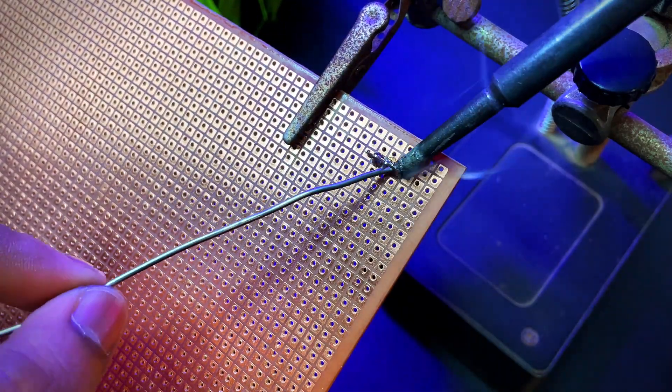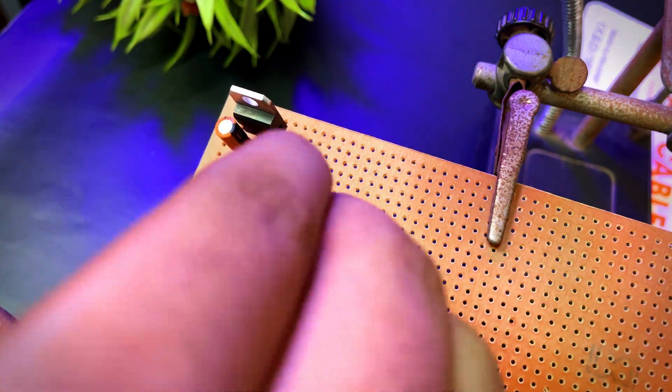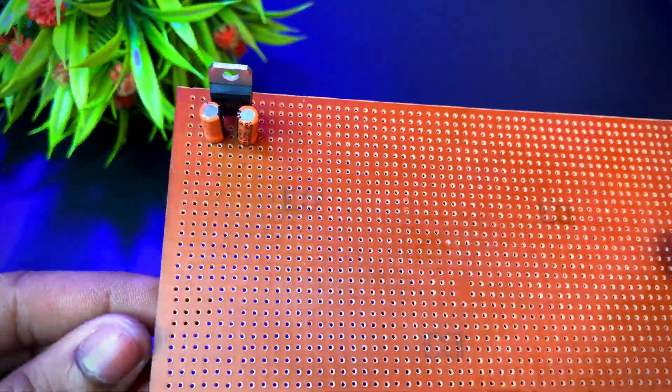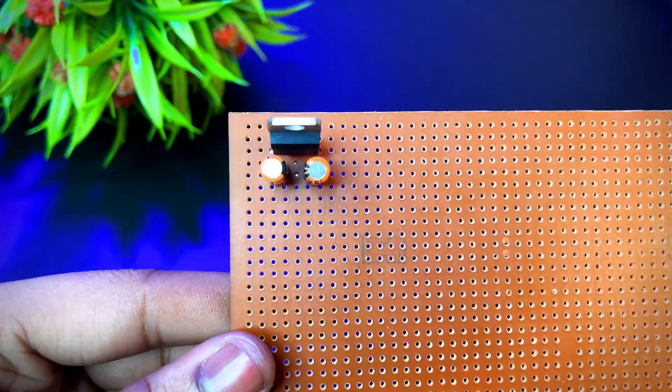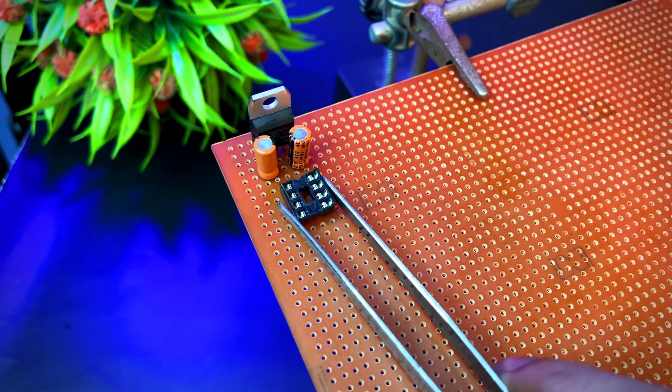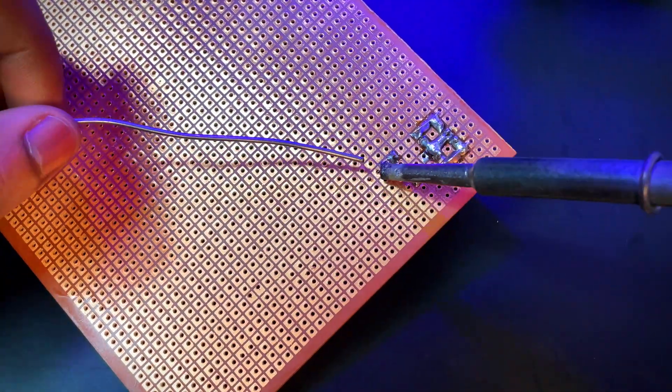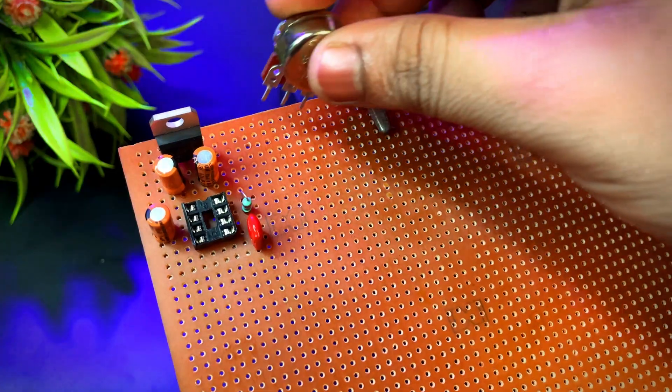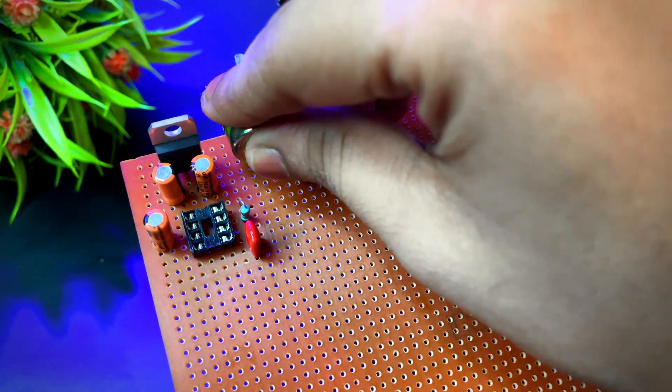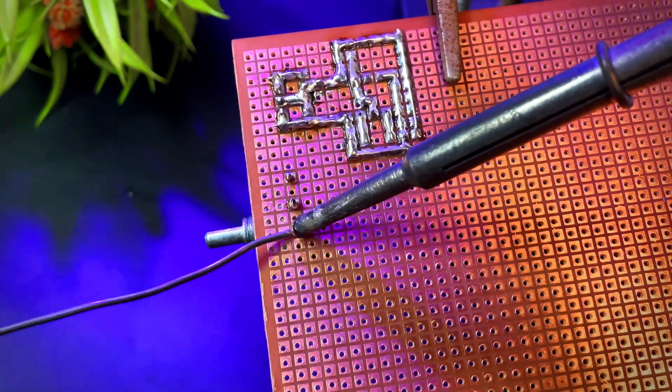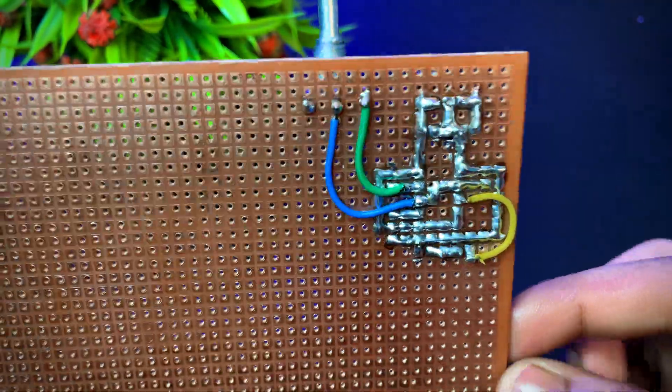I am using 7805 voltage regulator to convert 9 volt to 5 volt. And also, don't forget to add input and output capacitor to keep things smooth. Next up, the clock generator. This little circuit will send regular pulses to make our counter tick. I am using a classic astable mode of the 555 timer with 2 resistors and a capacitor to set the frequency.